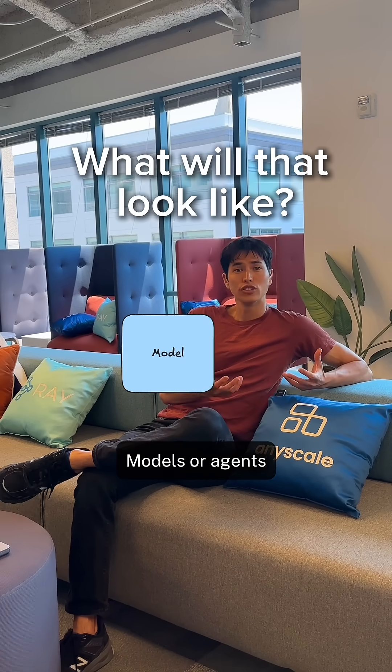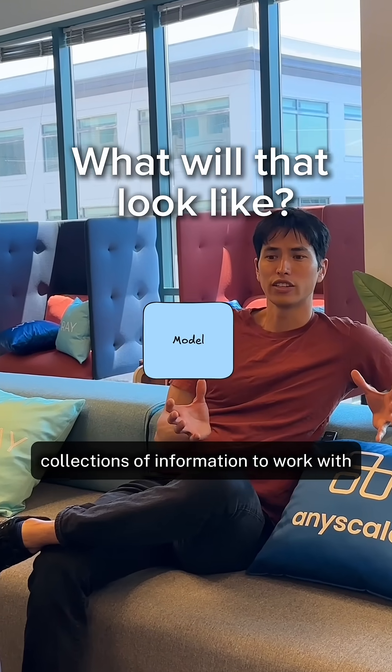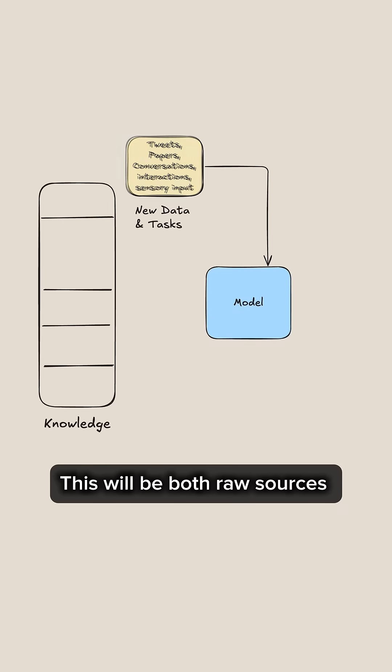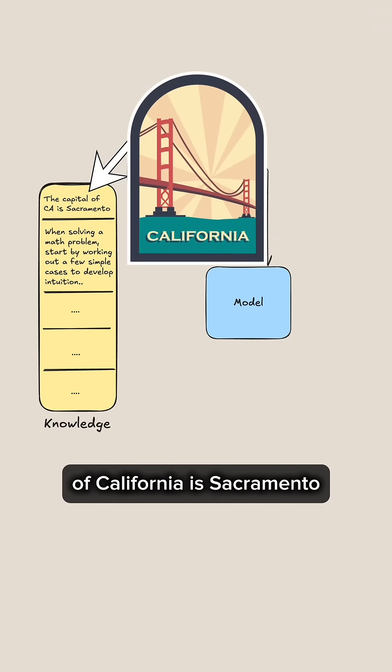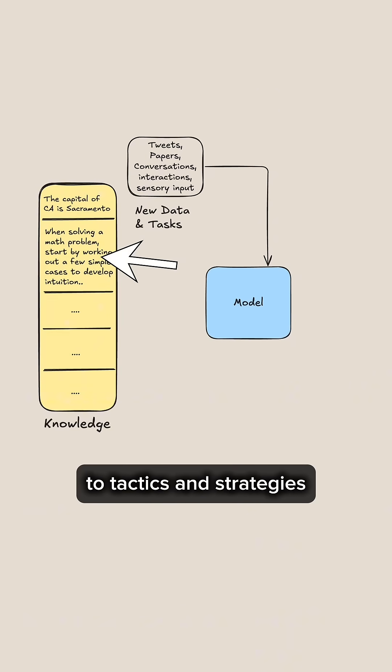Models or agents are going to have very large collections of information to work with. This will be both raw sources as well as curated knowledge. The curated information will include everything from facts like the capital of California is Sacramento to tactics and strategies.